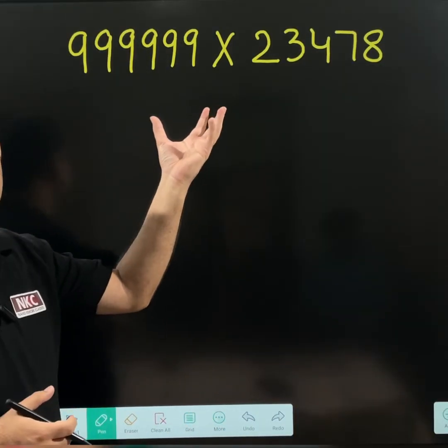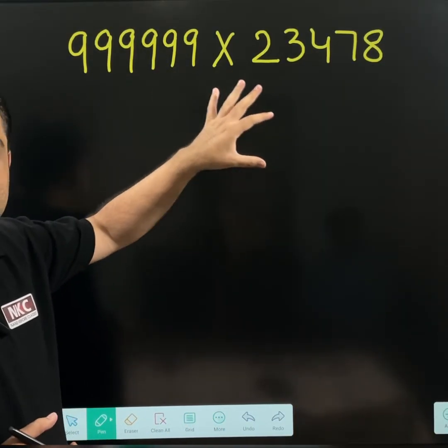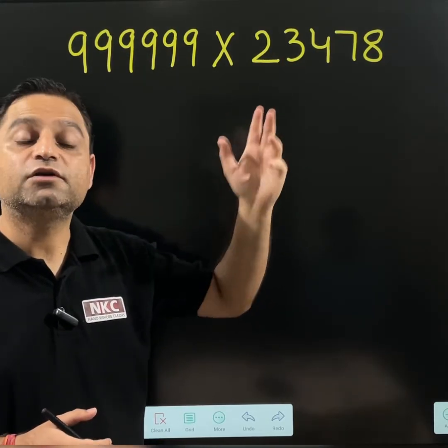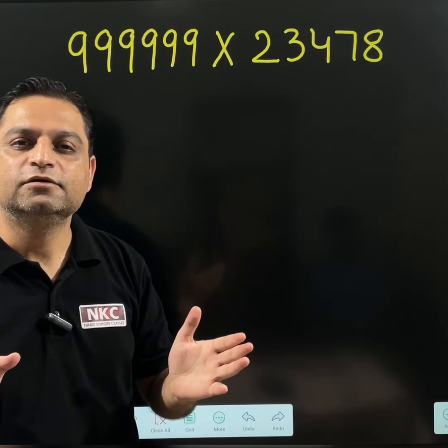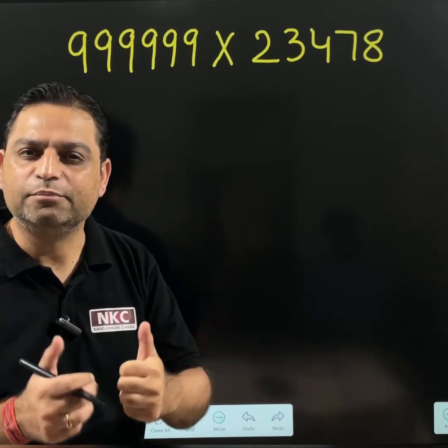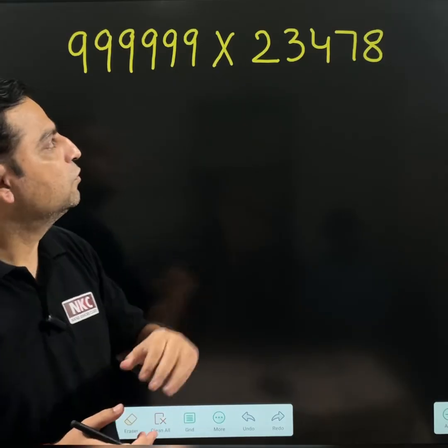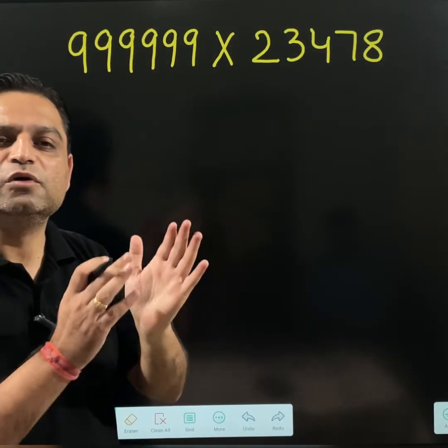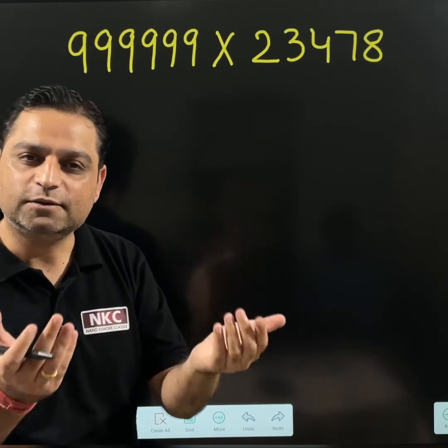Look at the equation on the screen. A very big number is there. Manually if you start doing the calculation, it will take a lot of time. So this is the time when we can use the trick and can crack the competitive exams. To learn how to do the multiplication with these type of numbers, I will start from the smaller values so that concepts remain clear.